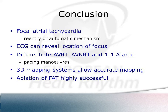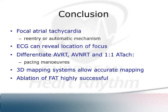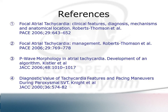In summary: focal atrial tachycardia can have either a re-entrant or automatic mechanism. The ECG is useful but only reliably in normal hearts. With pacing manoeuvres we can confidently differentiate 1-to-1 atrial tachycardia from other SVTs. 3D mapping systems are very useful, and these arrhythmias are amenable to catheter ablation — a very effective treatment for these patients.